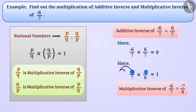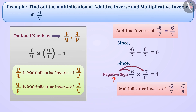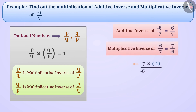Why did we not change the place of the negative sign? The multiplicative inverse of -6/7 is 7/(-6). But if we multiply -1 to both numerator and denominator, there is no change in the value and we get -7/6. Remember that generally we represent the negative sign with the numerator only.